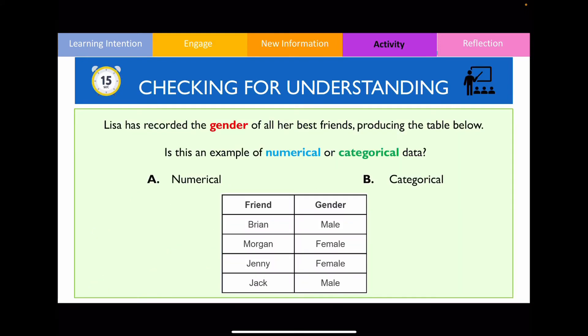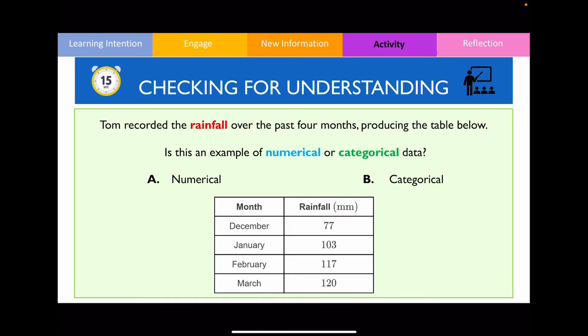Please have a go at answering this question and identify whether this is an example of numerical or categorical data. If you answered this correctly, because you're getting worded responses, this is an example of categorical data. Have a go with another question. The answer for this question is that this is an example of numerical data because you're collecting numbers as your responses.